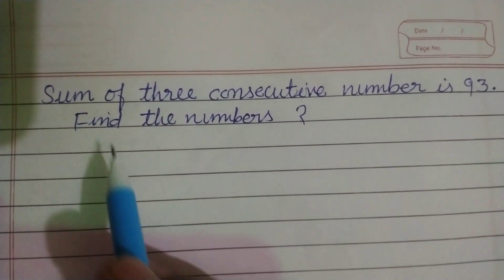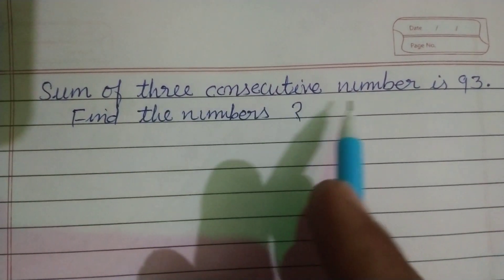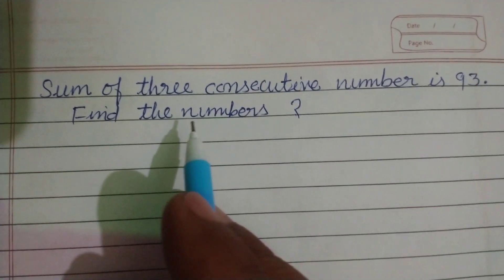Hello students. Welcome to this YouTube channel. Sum of three consecutive numbers is 93. Find the numbers.